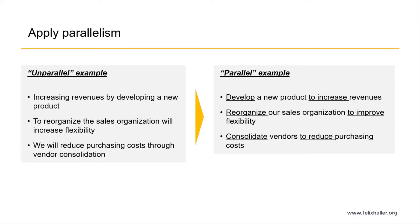On the left-hand side, the less impactful example has a grammatical structure that differs in each bullet. The first bullet says 'Increasing revenues by developing a new product' — the result comes first. The next bullet starts with the activity: 'To reorganize the sales organization, we will reduce purchasing costs.' The result and activity are mixed inconsistently. The takeaway is to always use parallel structure in your lists.